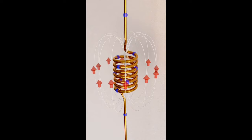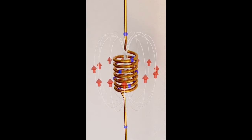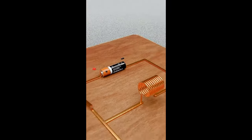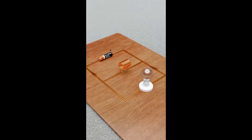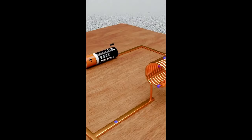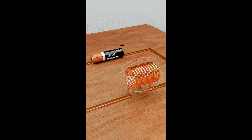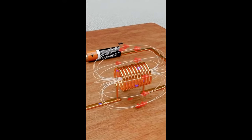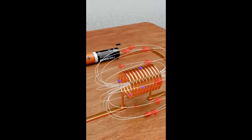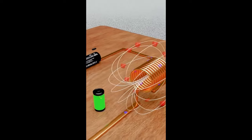Inductors store energy in the form of a magnetic field, and that can be seen as a kinetic motion of electrons, or a current. So capacitors and inductors are flip sides of the same reactive coin, storing and releasing energy in complementary modes.